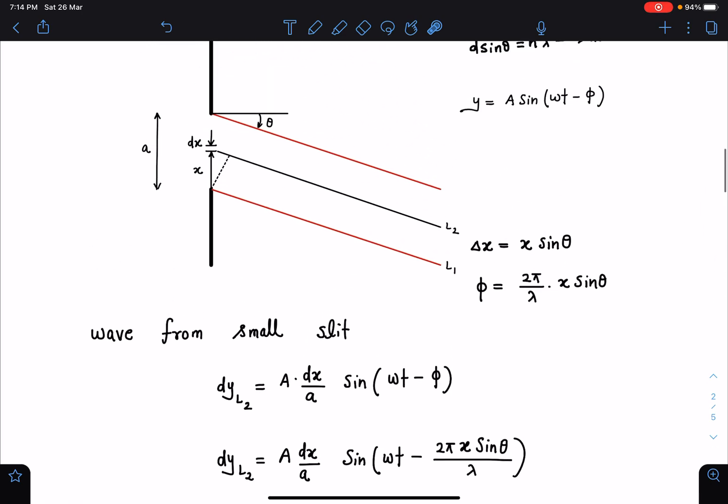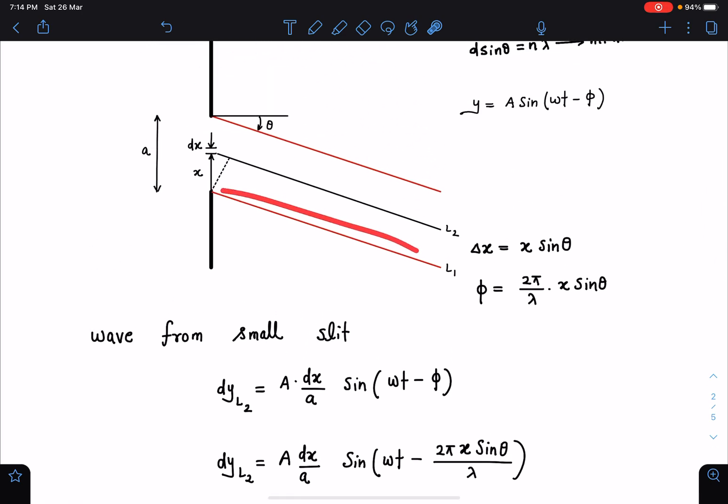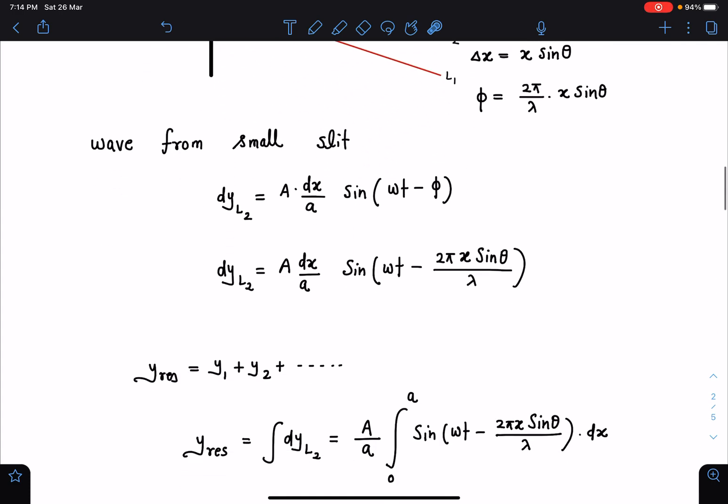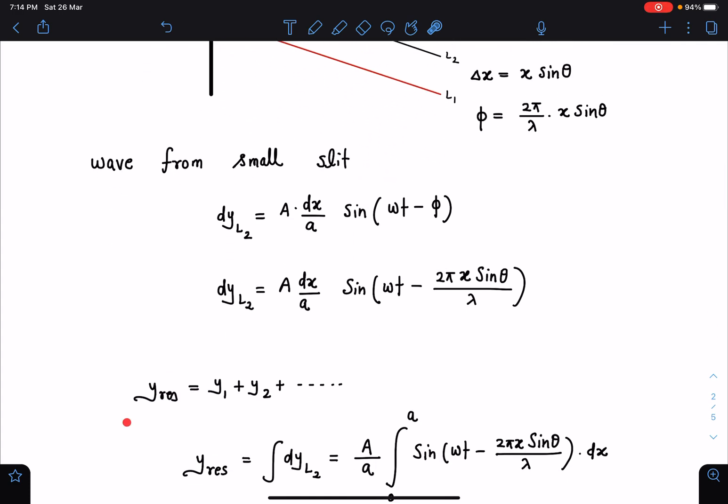sin omega t minus 2 pi x sin theta by lambda. Now I can add all these single single rays which are coming from this slit. y1 plus y2 plus y3 up to let us say n such rays are there. We can add them and we can get the resultant, you can say resultant of all.